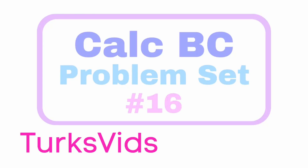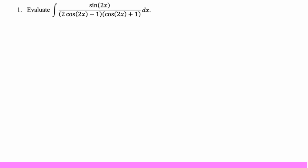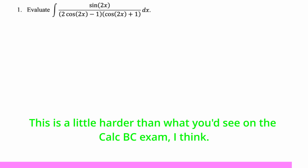In this video we're going to be doing Calc BC problem set number 16. The problems are in a playlist in the description below. Let's take a look. Number one: evaluate the integral of sine of 2x over (2 cosine of 2x minus 1) times (cosine of 2x plus 1). This looks scary, but it's actually a pretty straightforward substitution problem.